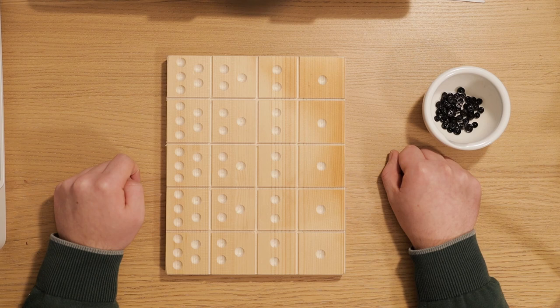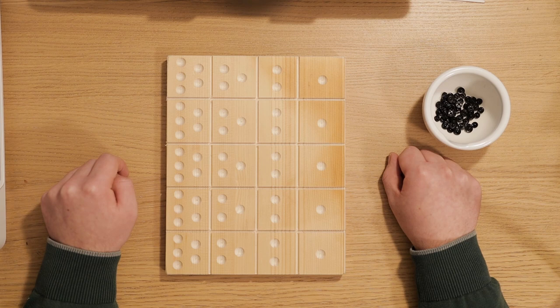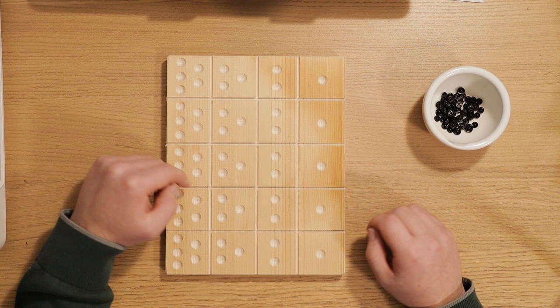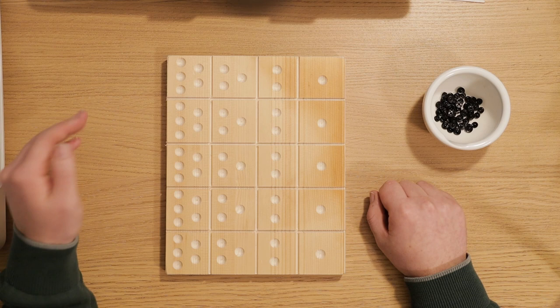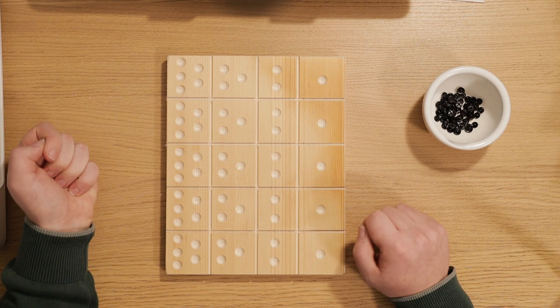As you might already be able to guess, subtraction is pretty much the same process in reverse. The larger number is placed on the board while the smaller one is placed to the right of it. And then buttons are removed from the board and placed to the left until there is the same amount of buttons on either side of the board. And then the buttons that are left on the board show you the result.